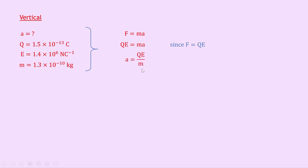So we get a equals qE over m and substituting in the numbers gives us 1.5 times 10 to the minus 13 times 1.4 times 10 to the 6 divided by 1.3 times 10 to the minus 10. Putting that into your calculator should give you an answer of 1615 meters per second squared.